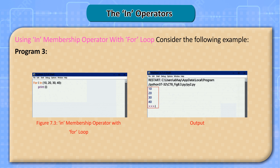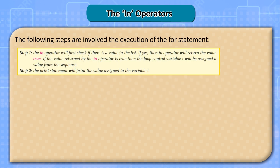Using the 'in' membership operator with for loop — consider Program 3. The following steps are involved in the execution of the for statement. Step 1: the 'in' operator will first check if there is a value in the list. If yes, the 'in' operator will return true. If the value returned is true, then the loop control variable i will be assigned a value from the sequence. Step 2: the print statement will print the value assigned to variable i.